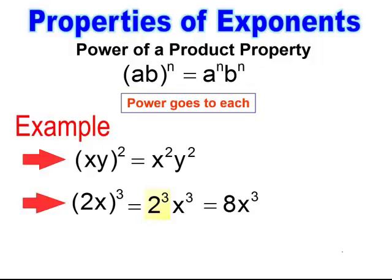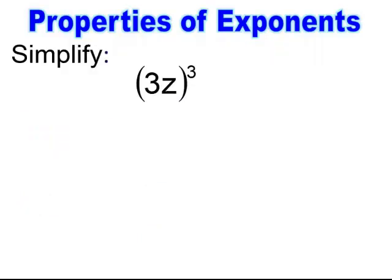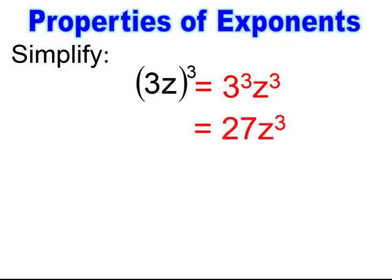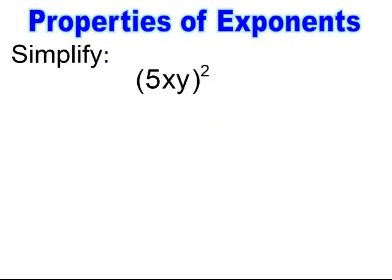Be very careful not to fall into the trap of multiplying the number by the power and getting 6 instead of 8. It is 2 to the 3rd power, not 2 times 3. We have 3 to the 3rd power, z to the 3rd power — evaluate 3 to the 3rd as 27z to the 3rd power. And you should have gotten 25x²y².